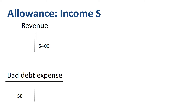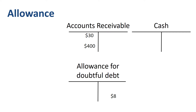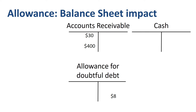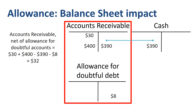The impact of recording the allowance on the income statement is: in revenue the full amount billed is recorded, and the estimated credit loss gets recorded in bad debt expense, which is an account in the category of Selling, General and Administrative Expenses, or SG&A. On the balance sheet, once we have recorded cash collections for the year, we can calculate accounts receivable net of allowance for doubtful accounts: $30 opening balance, plus $400 sales, minus $390 in collections, minus $8 doubtful debt allowance, equals $32 net accounts receivable balance.